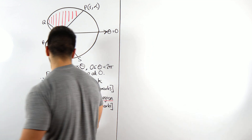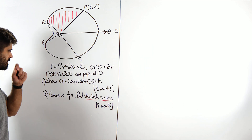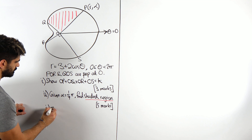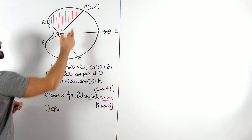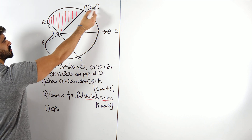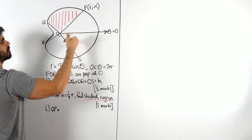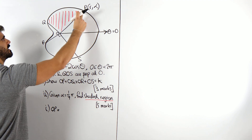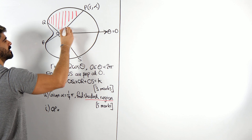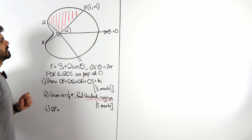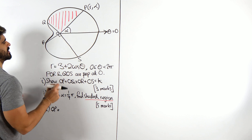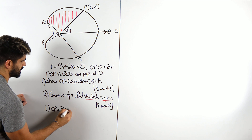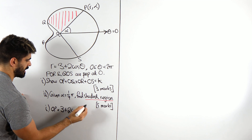We'll also find the shaded region area. It's only three marks for OP. What is OP? Well, here's P — its polar coordinates are R alpha, R being this length and alpha being the angle it makes to the pole. So we're just going to sub in this angle into here. We'll get R is 3 plus 2 cos alpha.